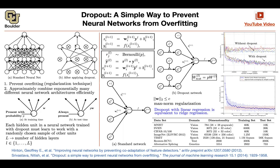That's one particular instance of that architecture. The next training data that goes in is going to see another architecture — maybe this node is killed, this one is active, this one is active, this one is killed. So each time a data point goes in, it's going to see a different architecture. It's going to go through some random architecture.